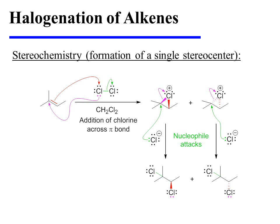And as chloride attacks, it attacks opposite the chlorine leaving group. This provides two enantiomeric vicinal dichlorides. However, only one of the two new tetrahedral centers is a stereocenter, and this is emphasized by drawing only that center with wedges and dashes.